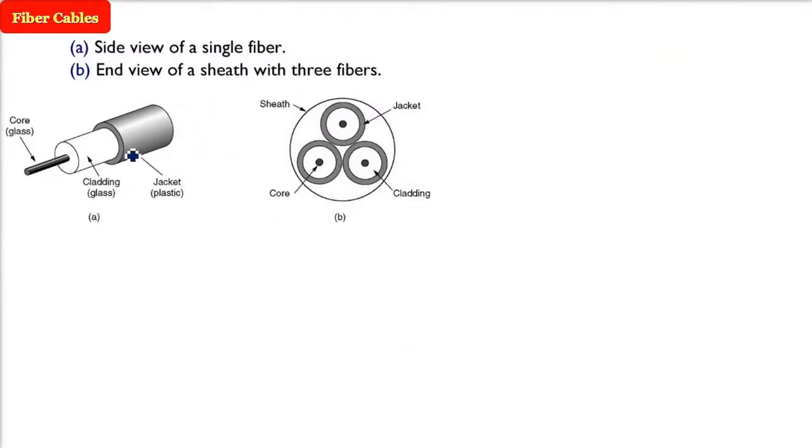There are two views in these fiber cables I am showing you. One is the side view of a single fiber. Here we are showing a top view where, inside a protective sheath, there are three different fibers.